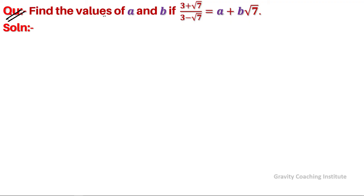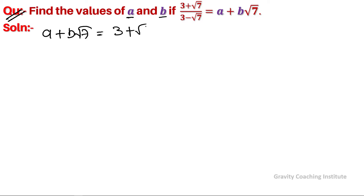Question: find the values of a and b if (3 + √7) / (3 - √7) = a + b√7. So here, given a + b√7 = (3 + √7) / (3 - √7), and we need to find the values of a and b.